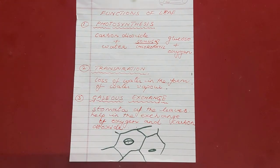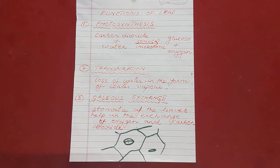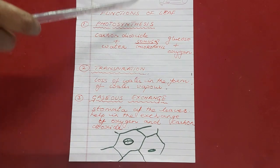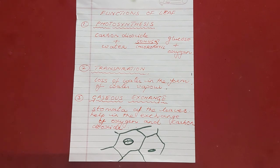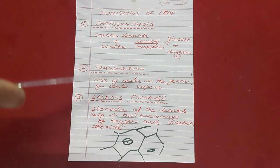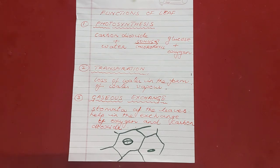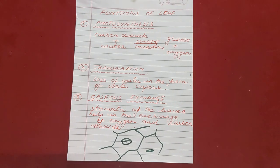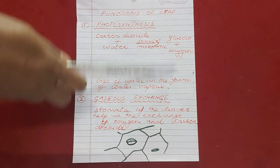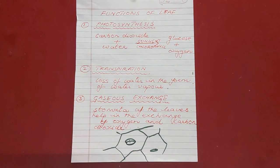Gaseous exchange is also a very important function of the leaf. During photosynthesis, carbon dioxide comes inside and oxygen goes out. During respiration, oxygen comes inside and carbon dioxide goes out. This gaseous exchange also takes place through the stomata, and the leaf is mainly responsible for it. The stomata of the leaves help in the exchange of oxygen and carbon dioxide during respiration. This completes the normal functions of the leaf.